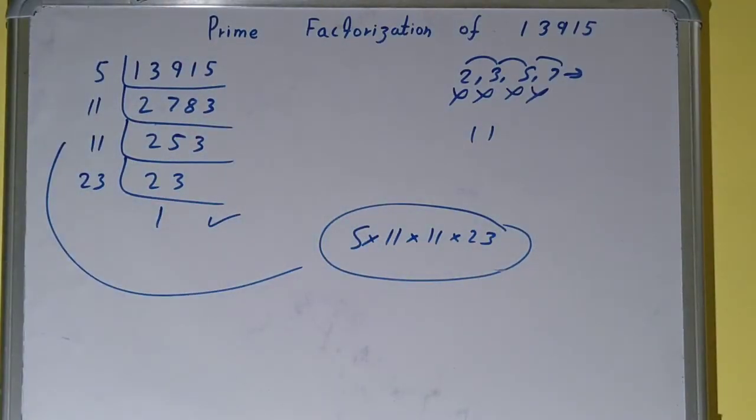And on multiplying, you will get the number back again. If you don't get it, you need to recheck your calculation. So this was all about prime factorization of the number 13915. If you found the video helpful, please hit the like button, do consider subscribing, and thanks for watching.